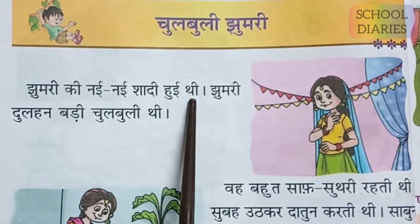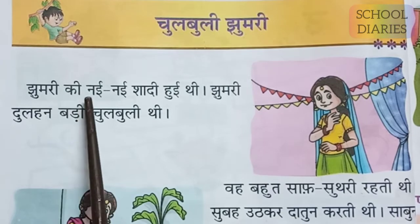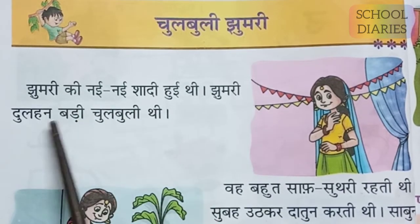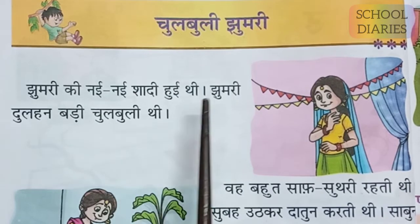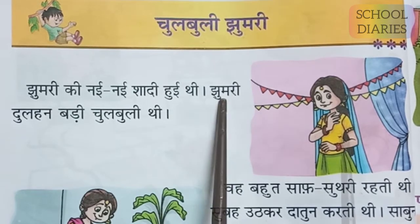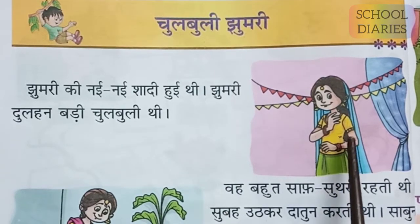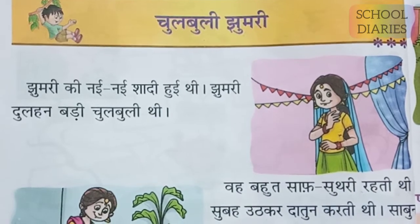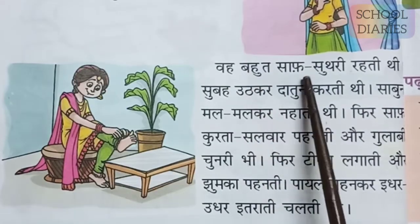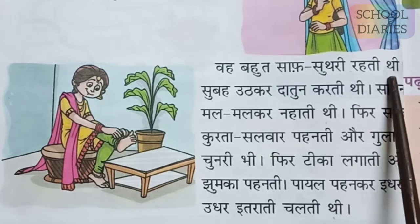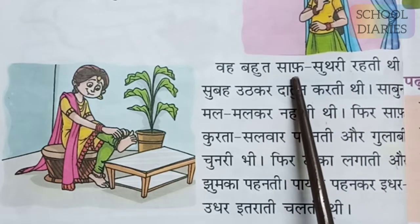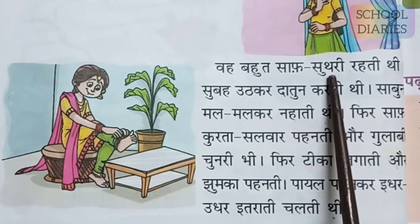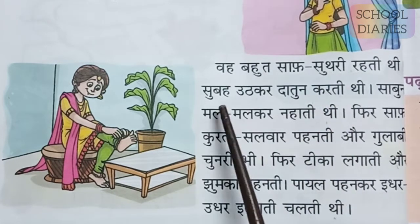Jhumari ki nahi nahi shadi huvi thi — Jhumari was a newly married bride. Jhumari dulhan badi chulbuli thi — she was very bubbly and very cute. Waha bohat saf sutri rehti thi — she always kept herself very clean and hygienic. Saf sutri means clean and hygienic.